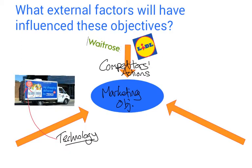Another crucial aspect that has grown in importance over recent years is business use of social media. We need to think about how the business uses its Facebook and Twitter presence, and how it encourages additional sales through social media. Many businesses do this very well. Tesco doesn't have a very strong social media presence, but it is something they need to be very aware of. So the key external influences so far are competitor actions and technology.